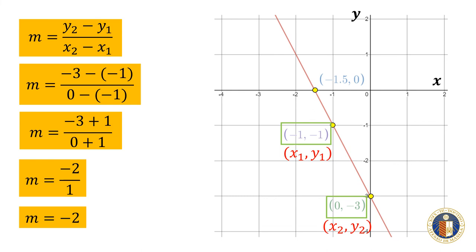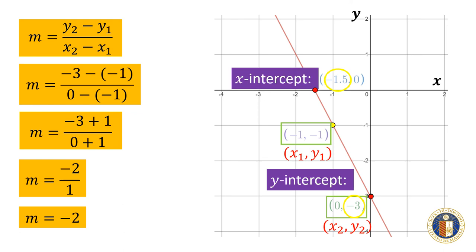The graph of the equation intersects the y-axis at point (0, -3). The y-intercept is indeed negative 3. Moreover, the graph of the equation intersects the x-axis at point (-1.5, 0). The x-intercept is really negative 1.5.